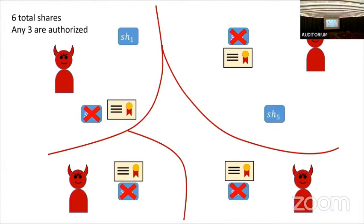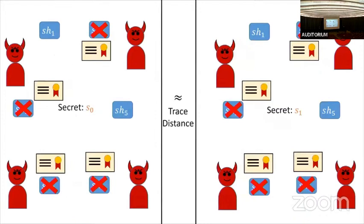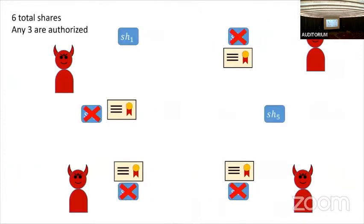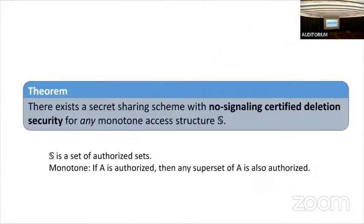If the adversary has deleted enough shares such that the remaining shares — say only two — are unauthorized, then the adversaries get to combine their views. For security, we require that the combined view should be independent of the secret. So it doesn't matter if you started with secret zero or secret one — the final combined view is independent. Our first result is that there exists secret sharing with no-signaling certified deletion for any monotone access structure, where a monotone access structure means that if you contain an authorized set, then you are also authorized.